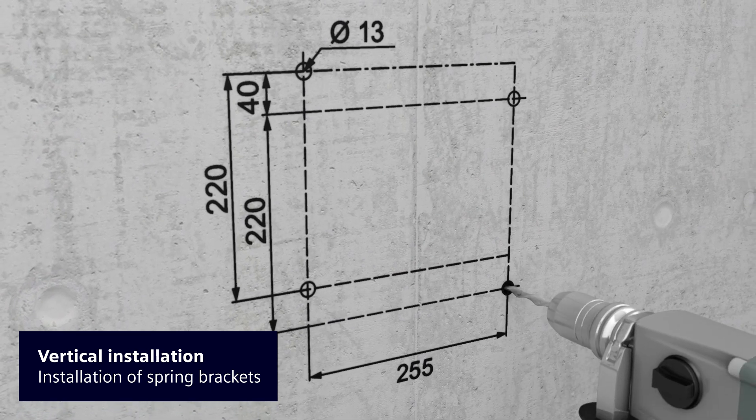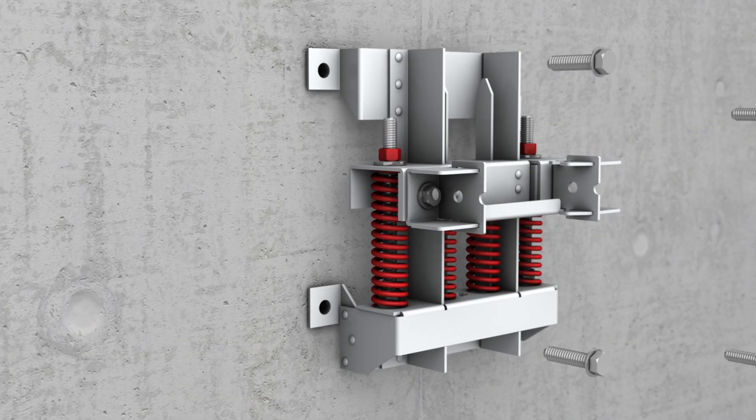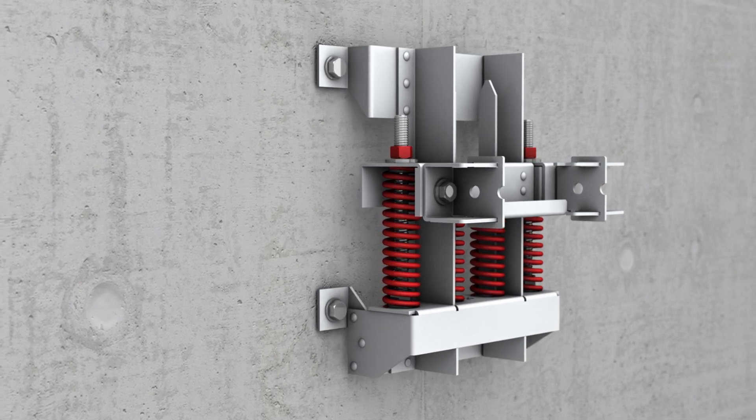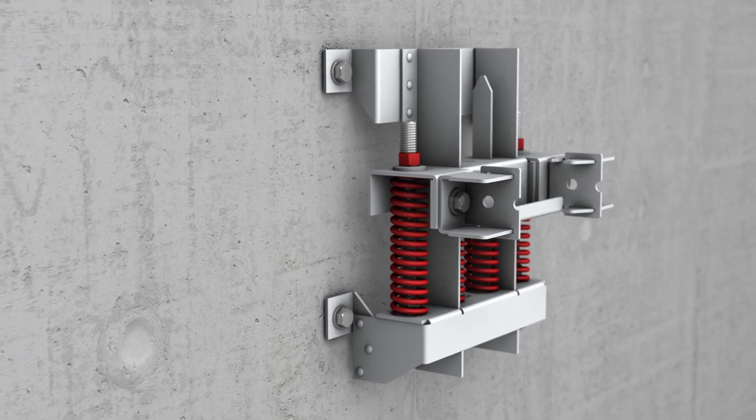These spring brackets are the first components to be wall-mounted in LI system installations. The spring bracket's function is to support and guide its own weight and the stress-dependent length extensions of the trunking units.